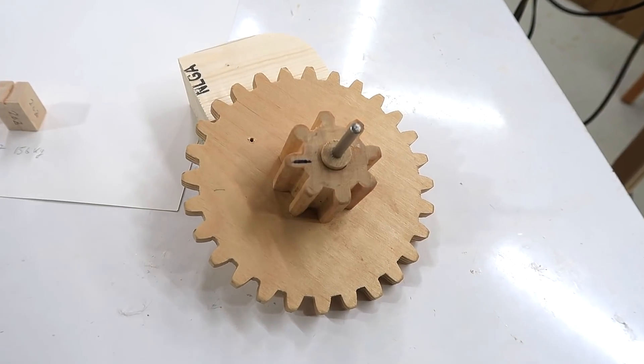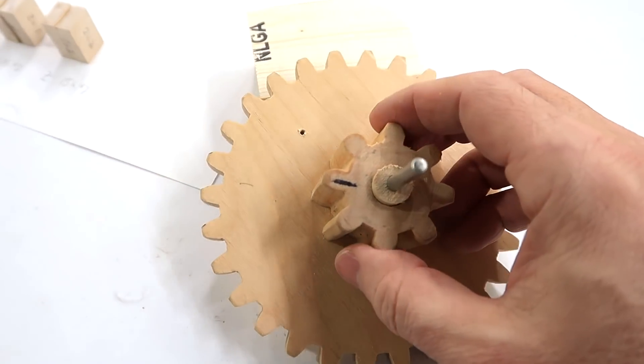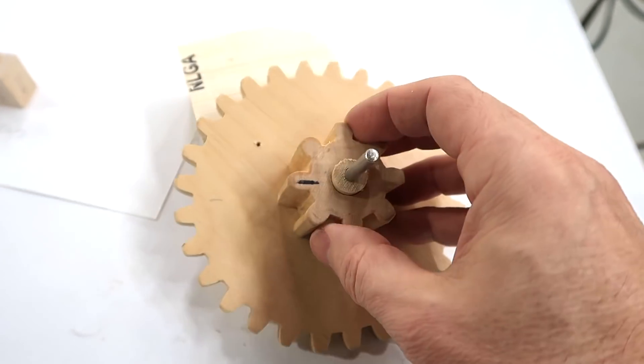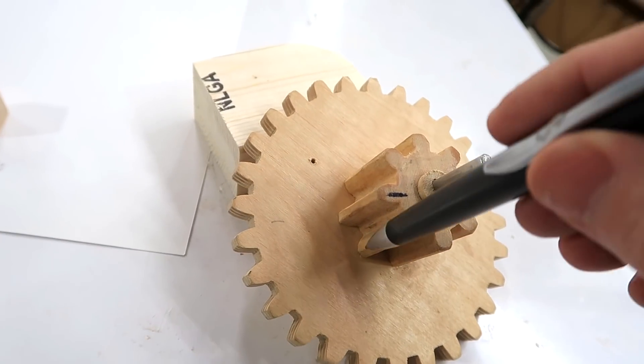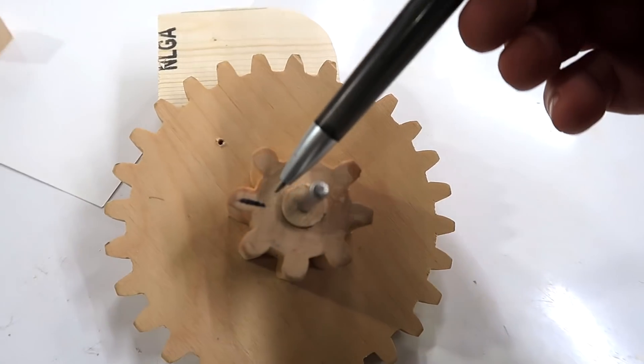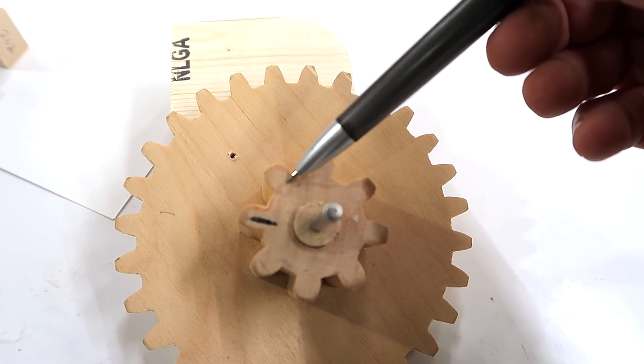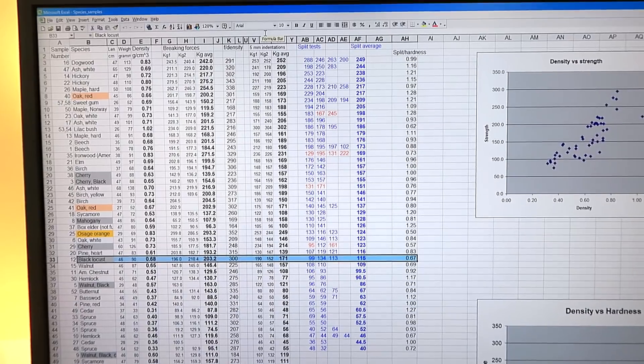For making mechanisms the split strength is often the most important strength because for instance this gear the grain actually goes this way so for any of these teeth to break off it's essentially splitting along the grain.